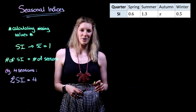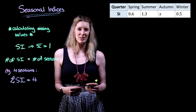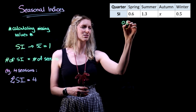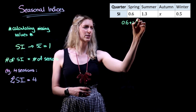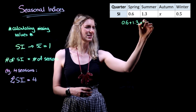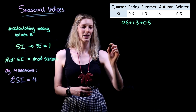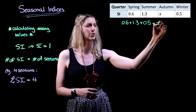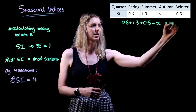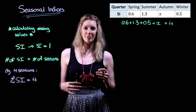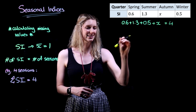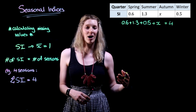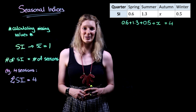We're going to start off by taking all of the values that we know, which are 0.6, 1.3 and 0.5, and we know that if we take those three values as well as our unknown autumn value, this is going to equal 4. Once we've set this up, it's just a case of solving this linear equation to find our unknown autumn seasonal index.